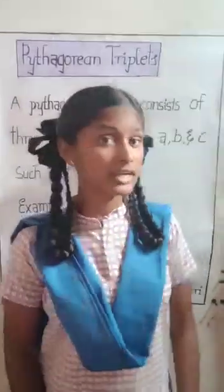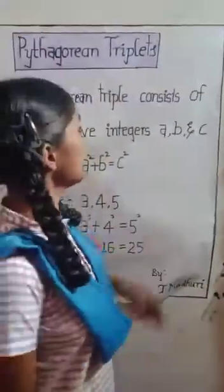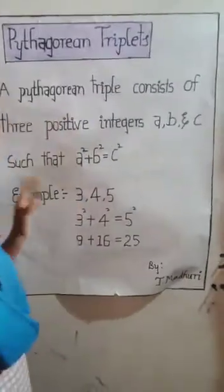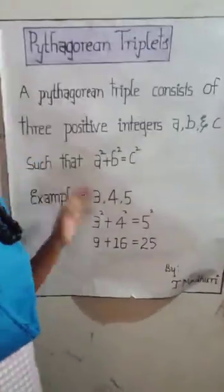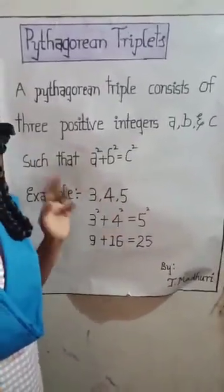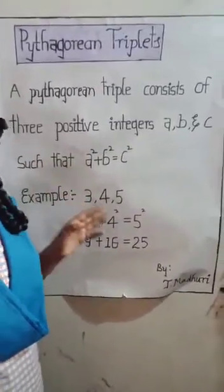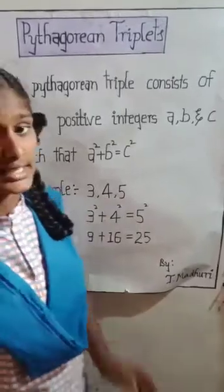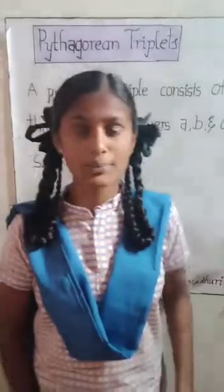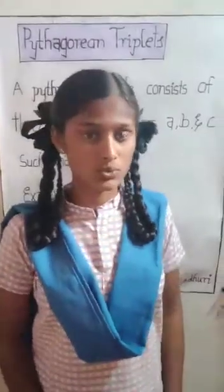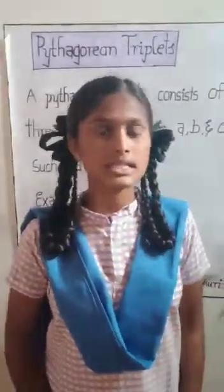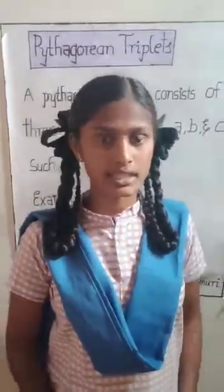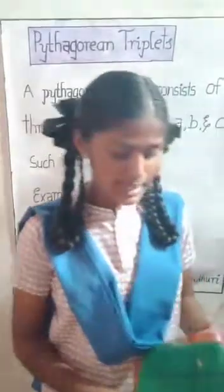A Pythagorean triplet consists of three positive integers A, B, and C such that A squared plus B squared is equal to C squared. Let us take an example.